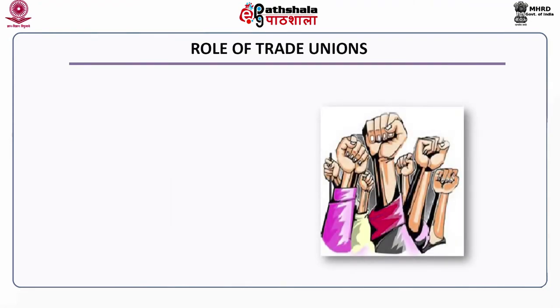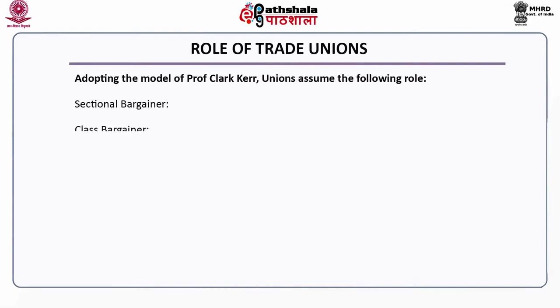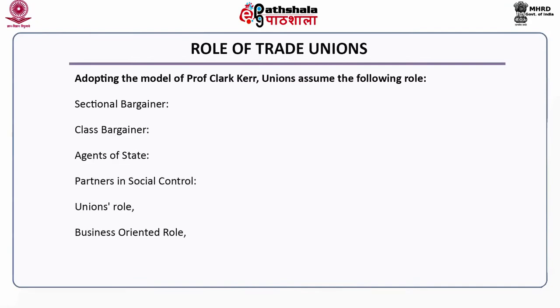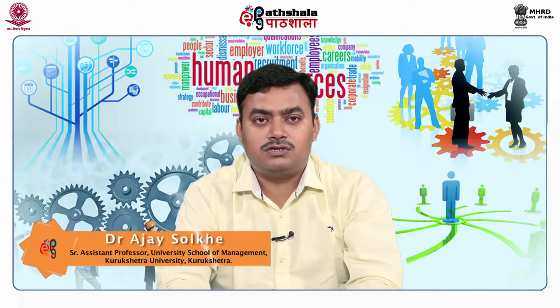What exactly is the role of a trade union in society as far as the employer is concerned? Adopting the model of Professor Clark Kerr, unions assume the following roles: sectional bargainer, class bargainer, agents of state, partners in social control, unions role, business-oriented role, and unions as change agent. The very first is sectional bargainers — representing the interest of the workers at plant, industry and national level, with multiplicity of unions, craft unions, white collar unions, etc.